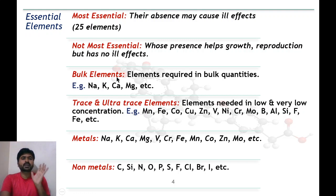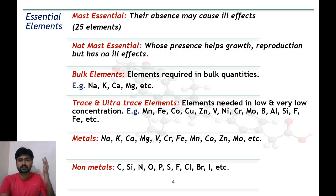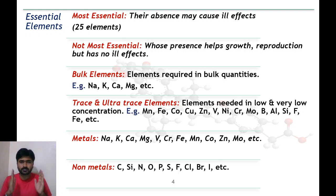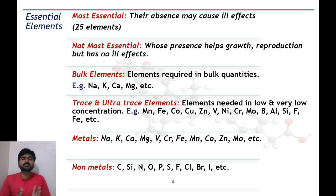The next type is bulk elements — elements which are required in bulk or larger quantities in the biological process. Examples include sodium, potassium, calcium, and magnesium, which are utilized on a large scale in the biological process. The next type is trace and ultratrace elements — these elements are needed in low and very low concentrations in the biological process. Examples include transition elements such as manganese, iron, cobalt, and copper, as well as some p-block elements, all utilized in trace and ultratrace quantities.